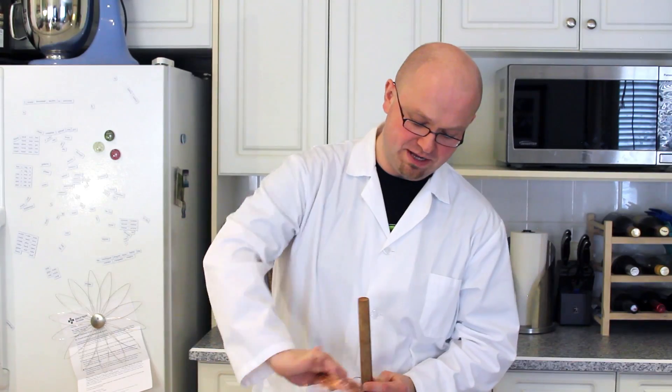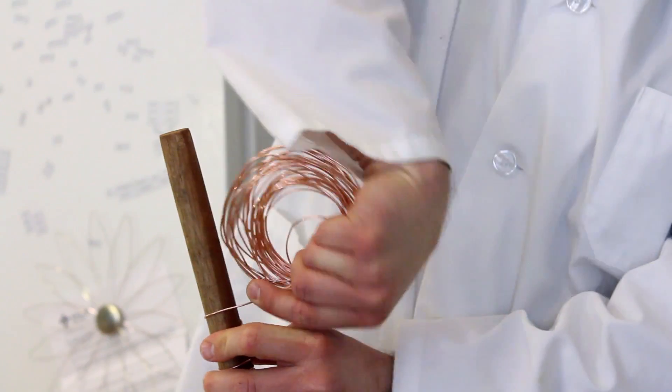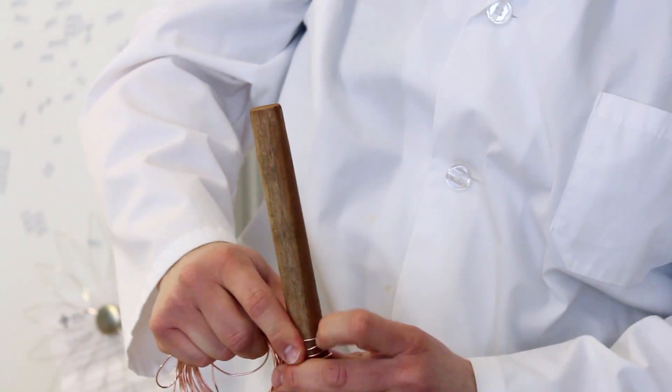The first step in making our simple electric train is to take our copper wire and wrap it around the broom handle. Simply start at one end and begin winding the copper wire in coils, keeping it as tight as possible without overlapping and without making any kinks in it.